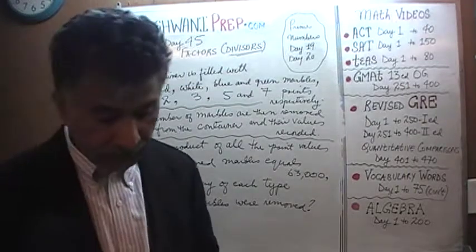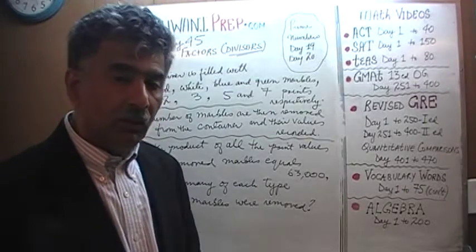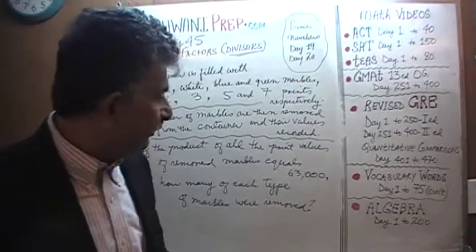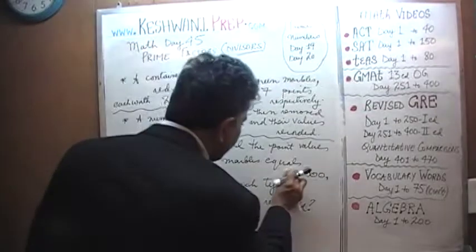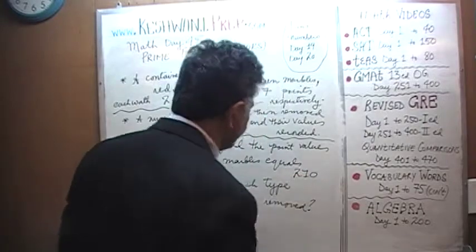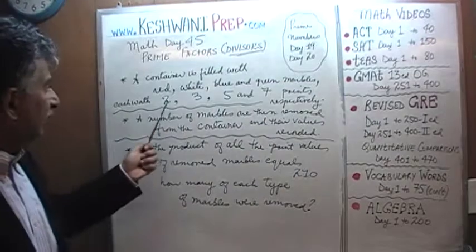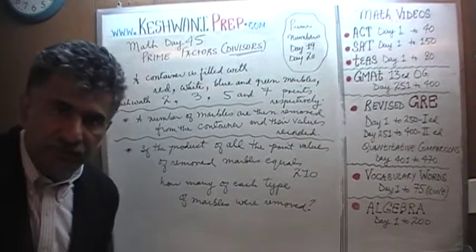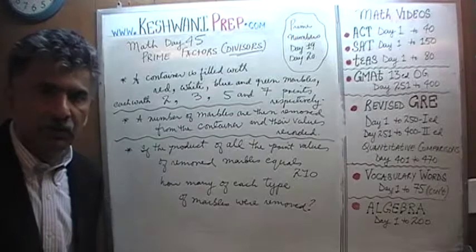If it is less intimidating for you, we could start out with a baby version of this problem — just to understand the concept. Let's do the baby version first. Instead of dealing with this monster of 63,000, let's make it a tiny number — let's pretend that it is 210. How do we know that this question deals with the notion of prime factors? The clue is right here: look at all the values — 2, 3, 5, 7 — those are all prime numbers. We simply have to find the prime factors of 210 and we are done.